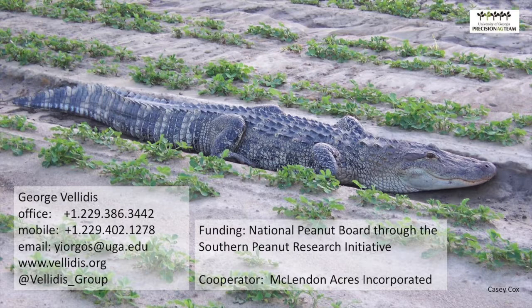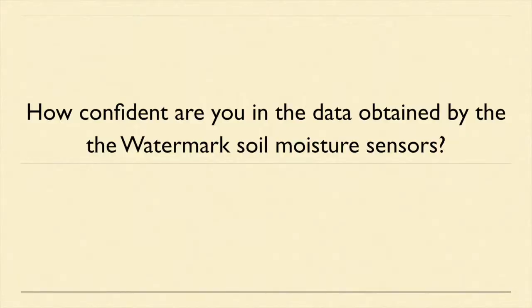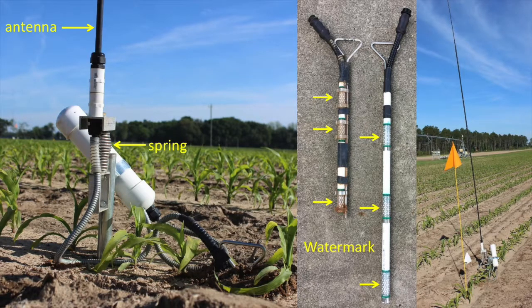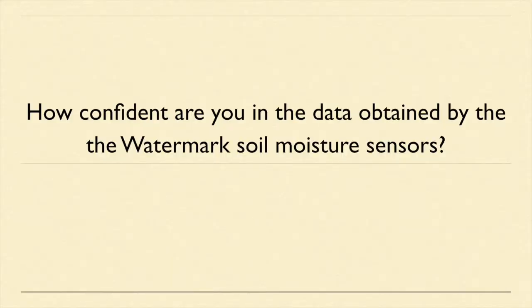Thank you very much, George. I'm not seeing any questions yet, so I had a couple I'd like to ask. The sensors you have are based on watermarks. Are you comfortable getting enough accuracy with watermark sensors to come up with an accurate prescription map? The watermark sensors have advantages and disadvantages. Their main advantage is that they're very cheap — we can create a probe with three watermark sensors for under $100. They are less responsive in how quickly they respond to soil moisture changes, but they respond in a reasonable amount of time for irrigation decisions. For irrigation scheduling purposes on agronomic crops, I think they're well-suited.